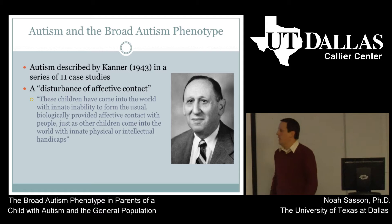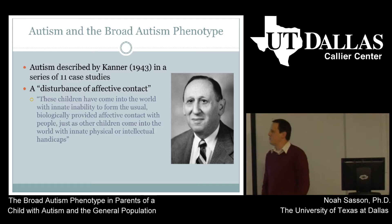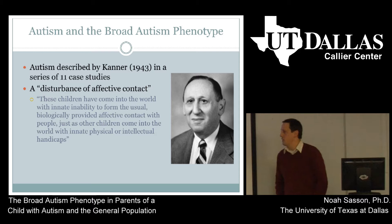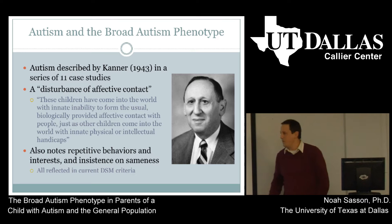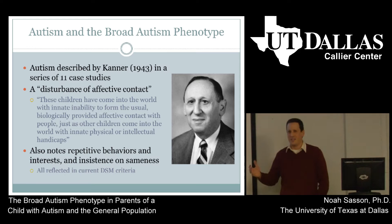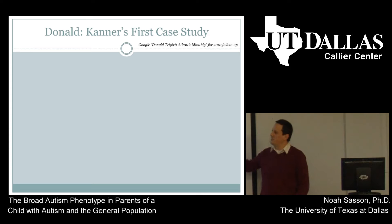To make sure we're all on the same page, his description focused on social impairments in these children. This is a quote from the paper: 'These children have come into the world with an innate inability to form the usual biologically provided affective contact with people, just as other children come into the world with innate physical or intellectual handicaps.' He saw this as a new clinical description focused on social deficits. He also noted repetitive behaviors, repetitive interests, insistence on sameness — all characteristics still reflected in the current DSM. The first case study Kanner focuses on in that paper is a child named Donald Triplett.